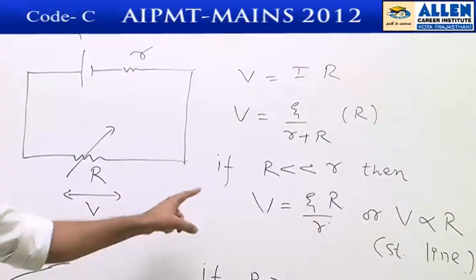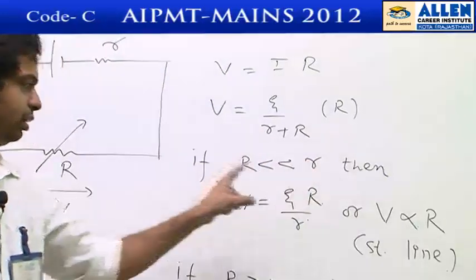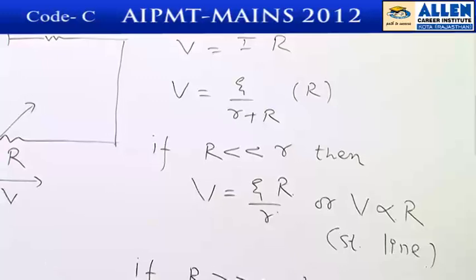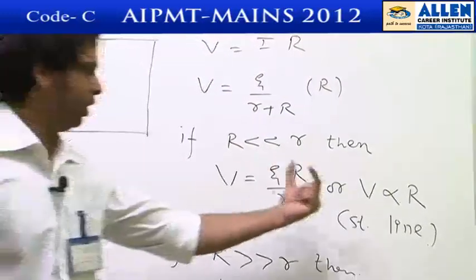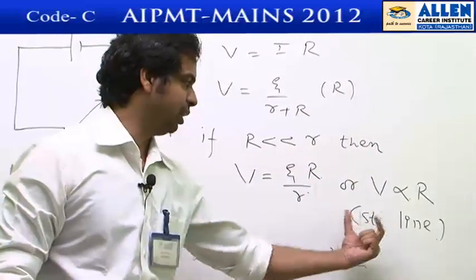If resistance R is very less, then V will equal E times R over r, that means small r is negligible or V proportional to R. In this part, graph will be a straight line.